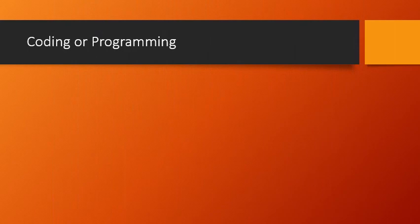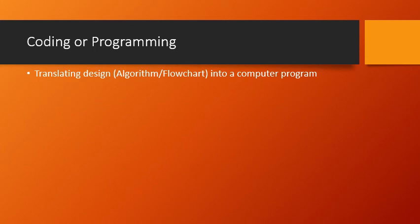The next step is coding — writing the actual program. Based on the design (algorithm or flowchart), we translate it into a programming language. We will focus on high-level programming languages, specifically C programming this semester. For each statement written in the algorithm, we convert it into proper programming language instructions or statements.